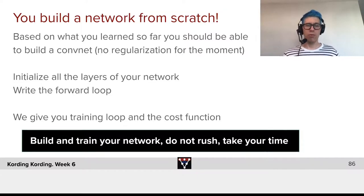So, what will you have to do? Well, initialize all the layers of the network. You need to make sure that you have all those layers. And then you will have to write the forward loop. And we will, for the moment, give you the training loop and the cost functions.